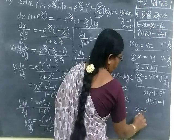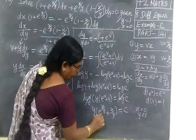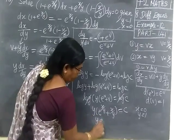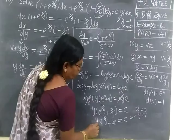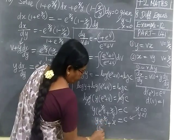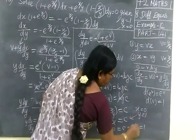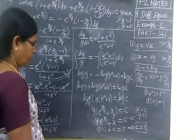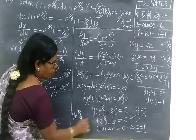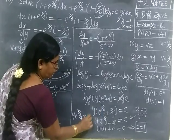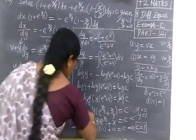Given x equal to 0 and y equal to 1, so substitute: y into e power x by y plus x equal to c. Substituting y equal to 1 and x equal to 0: 1 times e power 0 plus 0 equal to c. e power 0 is 1, so c equal to 1. Now substitute the answer: c equal to 1. Taking y inside, y·e power x by y plus x equal to 1. So the final answer is y·e power x by y plus x equal to 1. Thank you.